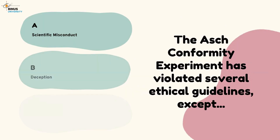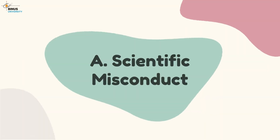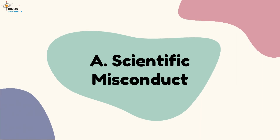The second question: the Asch Conformity Experiment has violated several ethical guidelines, except which? A. Scientific misconduct. B. Deception. C. Informed consent. The correct answer is A: Scientific misconduct.